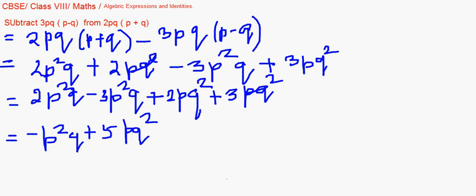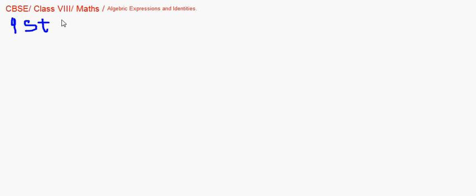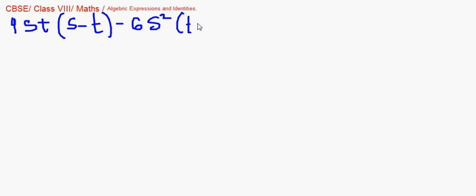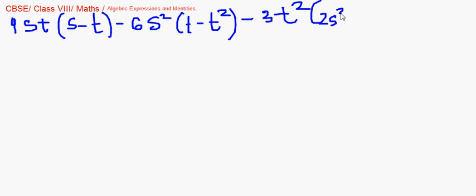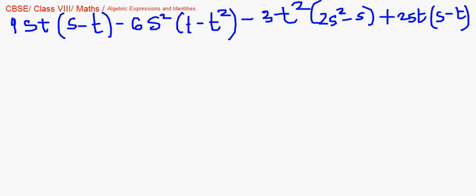Let's move on to one more question. This is a simplification. We will write it first. It is 4st multiplied by (s minus t), minus 6s²(t minus t) — and then we also have 2s² minus s plus 2st, multiplied by (s minus t). Let us remove the brackets.